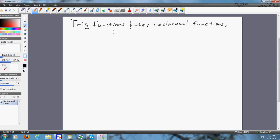I'm going to quickly do some trig functions and the reciprocal functions. In the last video we took a note and we said sine of theta equals opposite over hypotenuse, cosine of theta is equal to the adjacent over the hypotenuse, and the tangent of theta is equal to opposite over adjacent.